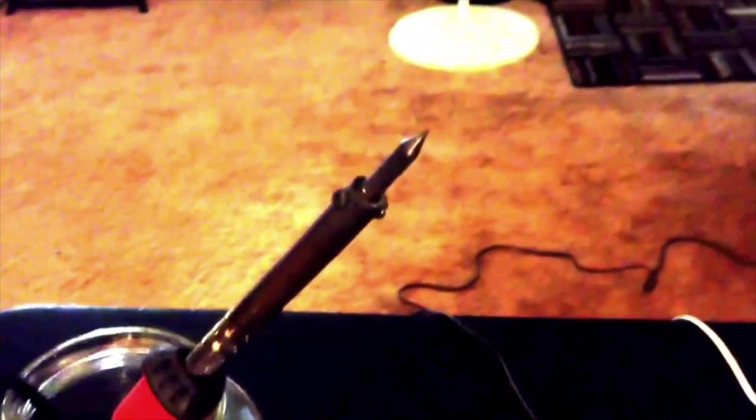Because objects produce increasingly shorter wavelengths as they become hotter, an ordinary soldering iron gets hot enough to produce near-infrared radiation. This time-lapse clip shows a soldering iron heating when turned on and then cooling again after being switched off.